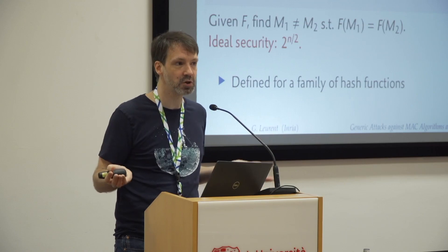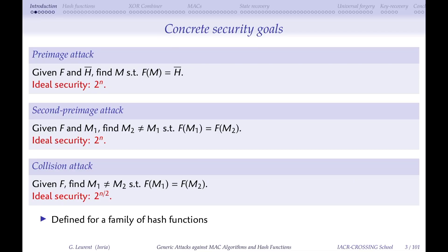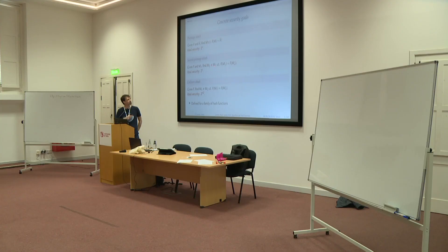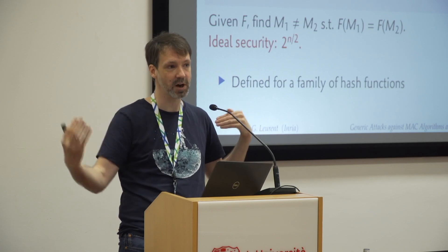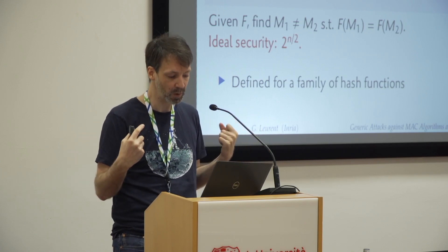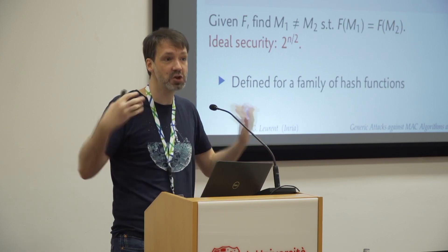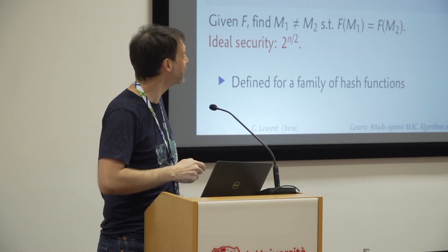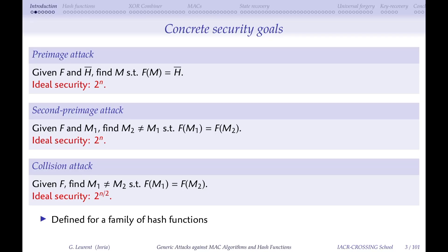The basic idea of looking like a random function is not something you can formally define, so in a more concrete setting there are three main security goals. The first is that pre-image attacks should be hard: given a target value h-bar, it should be hard to find a message m such that f(m) equals h-bar. The second pre-image attack should also be hard — you are given a first message m1 and must find m2 such that f(m1) equals f(m2). In the ideal setting, the complexity of both attacks is 2^n.